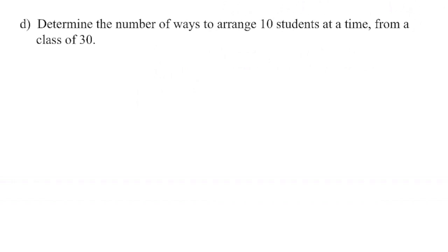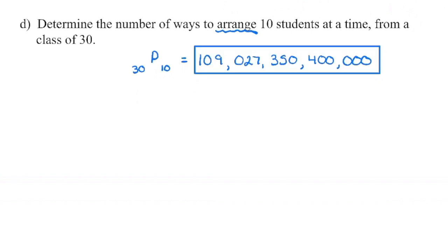In the final example, we are asked to determine the number of ways to arrange — so as soon as we see 'arrange,' grab your highlighter, that's a permutation — arranging 10 students at a time from a class of 30. There are no conditions, so we go straight into permutation notation: 30P10. Your calculator will give this number in scientific notation, and when converted, this is the number of different arrangements possible.